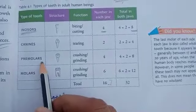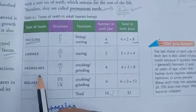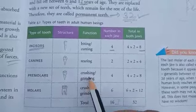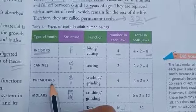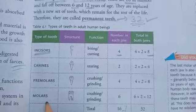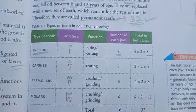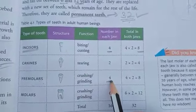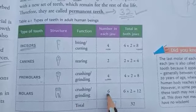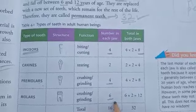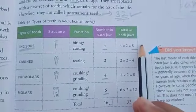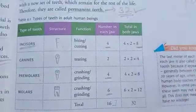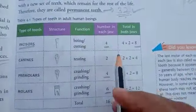Next are premolars and molars. Both premolars and molars are used for crushing and grinding food. Premolars are 4 in the upper jaw and 4 in the lower jaw. Molars are 6 in the upper jaw and 6 in the lower jaw. You need to know all the numbers and functions of each type of tooth.